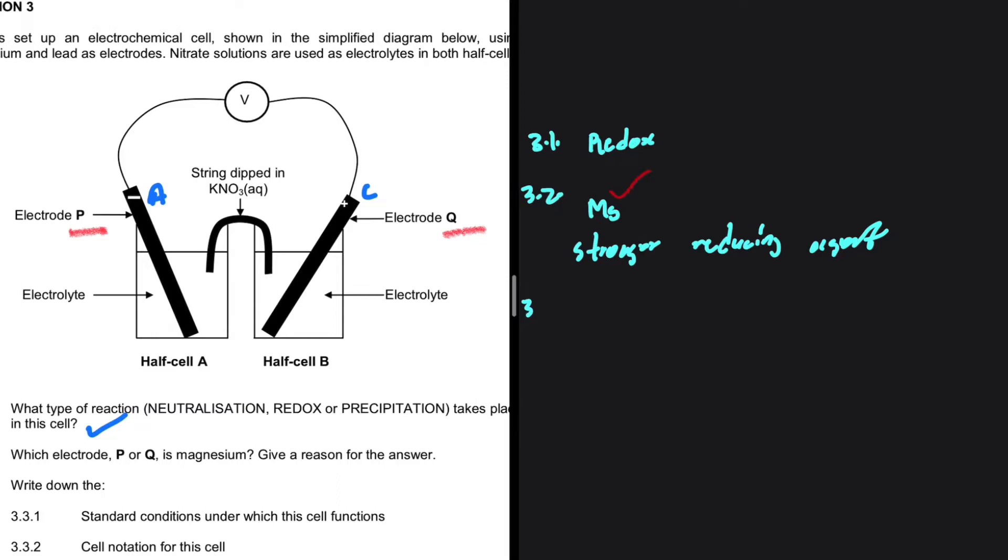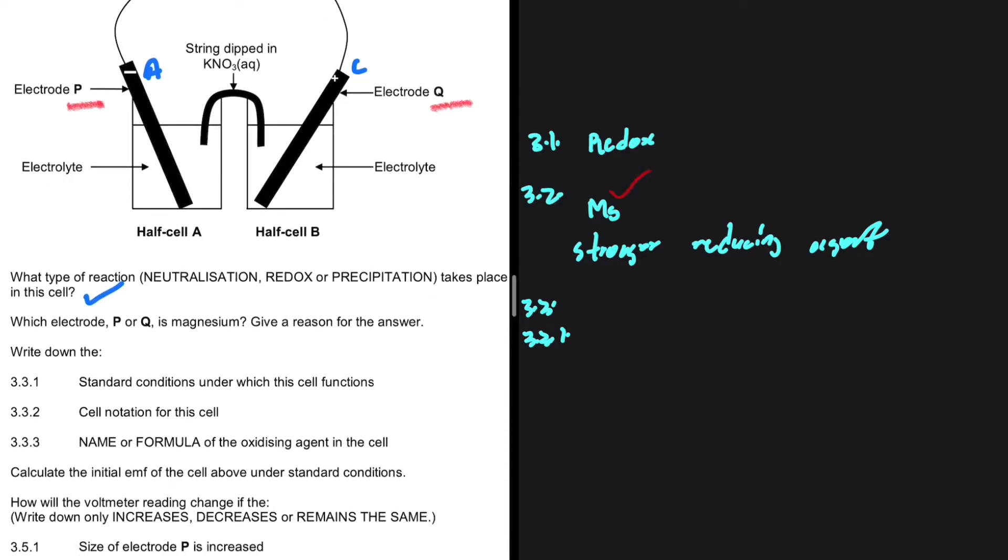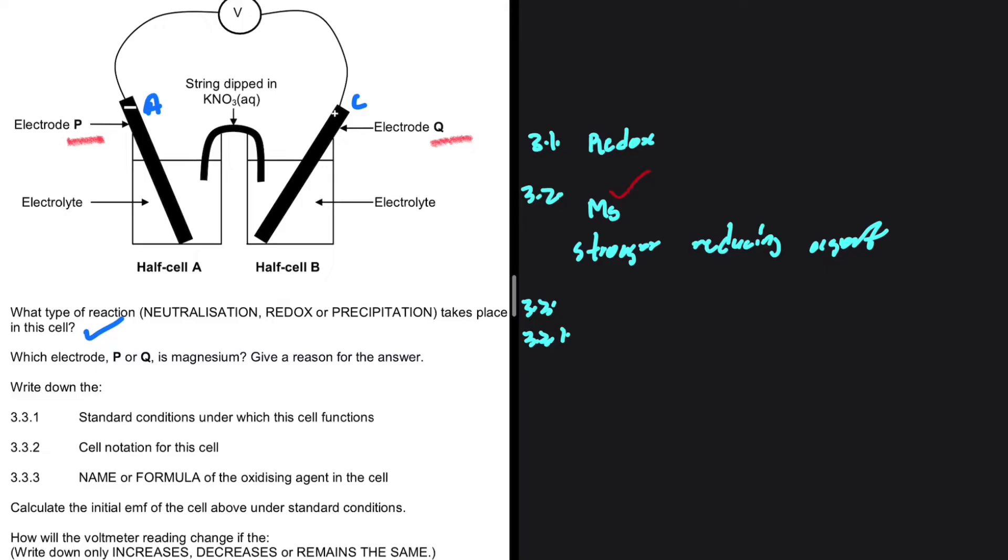Let's take a look at 3.3.1. Write down the following, the standard conditions under which this cell functions. This is a galvanic cell.